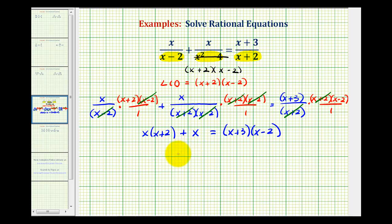Now we'll clear the parentheses and solve the equation. So here we'll have x squared plus two x, plus x equals, here we'll have x squared minus two x plus three x minus six. Now we'll combine like terms, we'll have x squared plus three x equals, on the right side we'll have x squared plus x minus six.